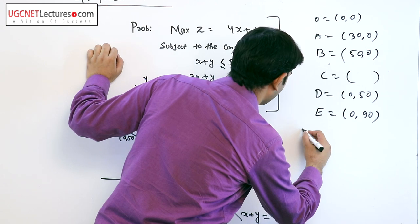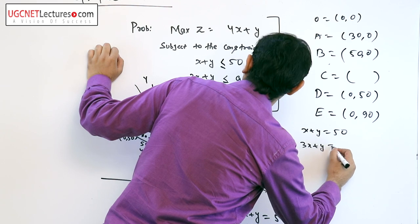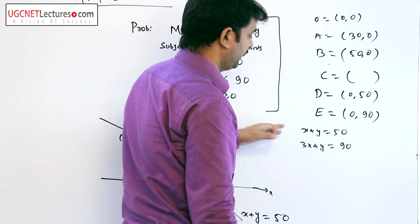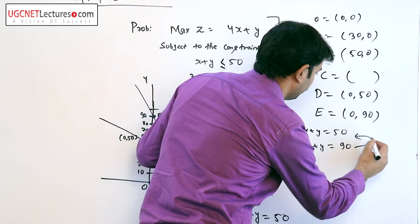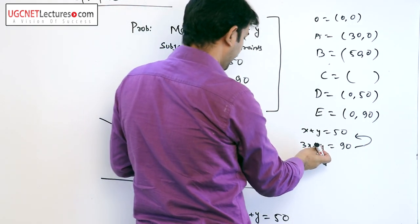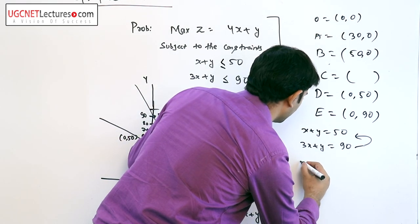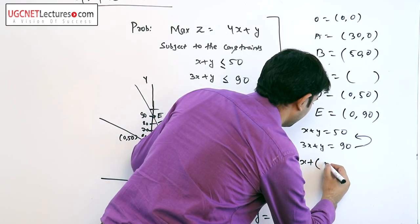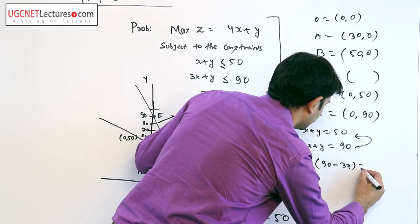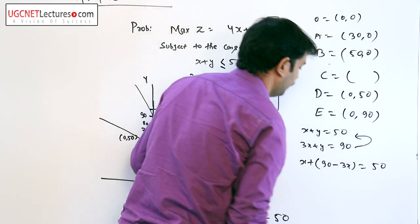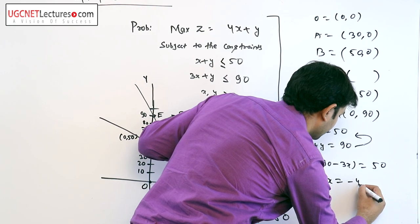If we solve x plus y equals 50 and 3x plus y equals 90, we can find x and y from these two equations easily by expressing y in terms of x and substituting in the first equation. So x plus (90 minus 3x) equals 50, which gives minus 2x equals minus 40, therefore x is 20.